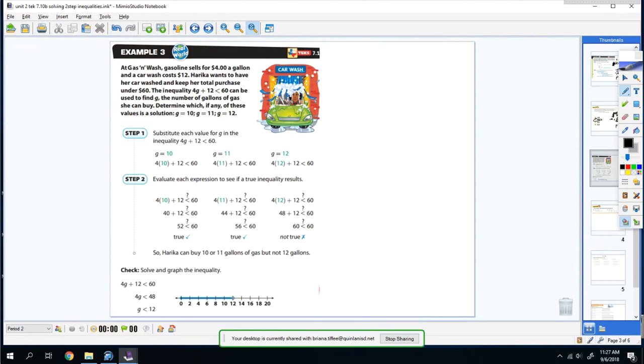Now what we're going to do is we're actually going to determine if values are true. So Gas and Wash gasoline sells for $4 a gallon, and car wash costs $12. She wants to have her car wash and keep her total purchase under $60. The inequality 4g plus 12 is less than 60 can be used to find g. So we have the values of g equals 10, g equals 11, and g equals 12. So what we're going to do is determine which values are true. So the way you do that is you actually just plug it into the inequality.